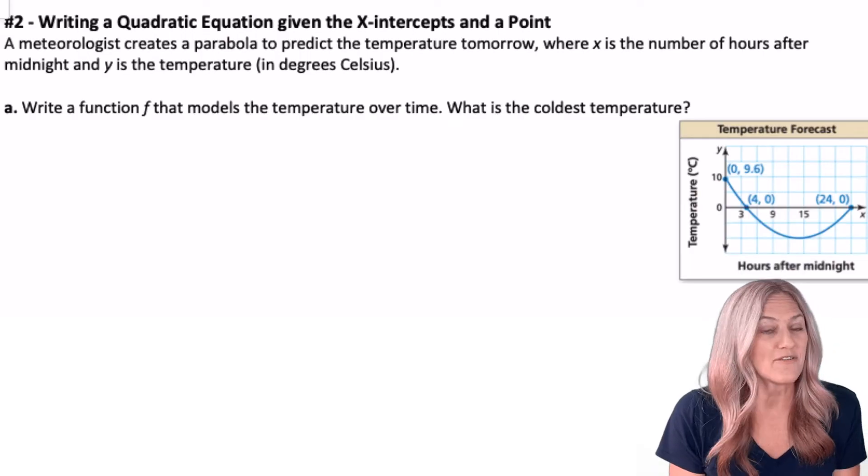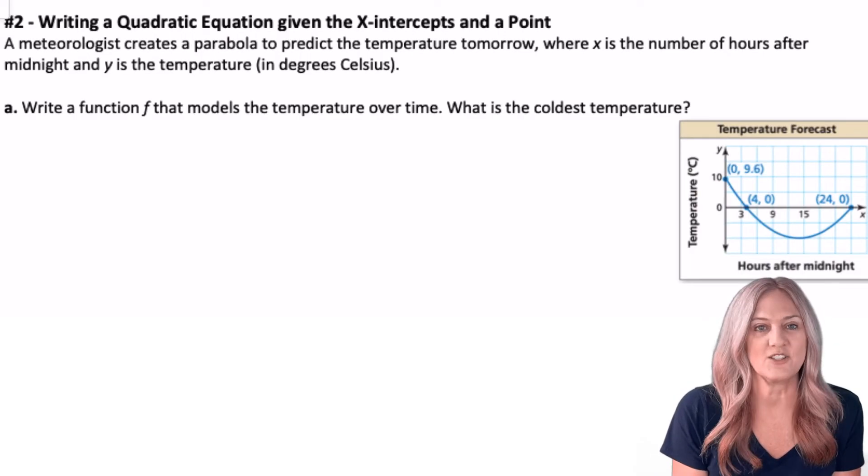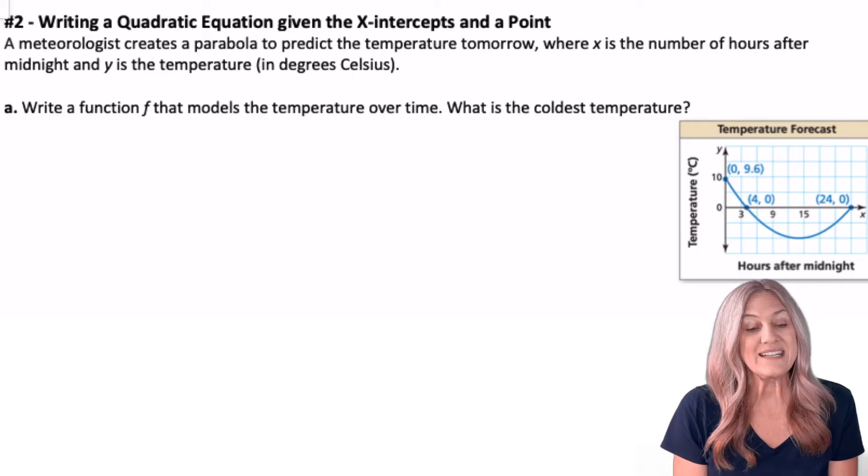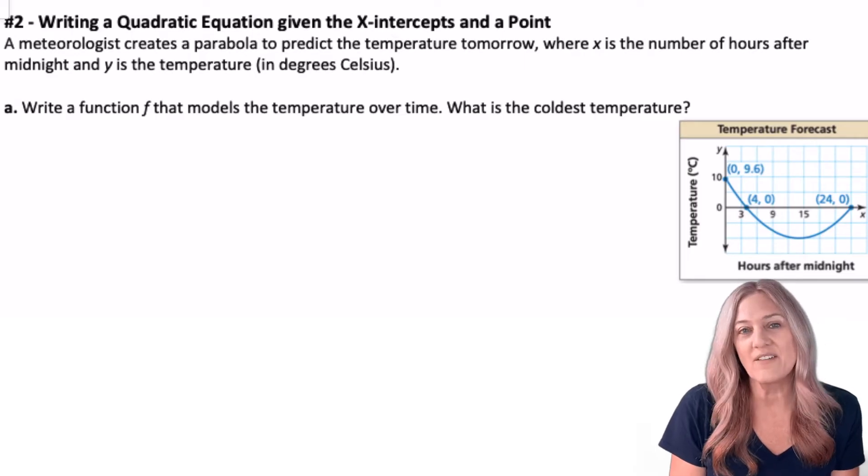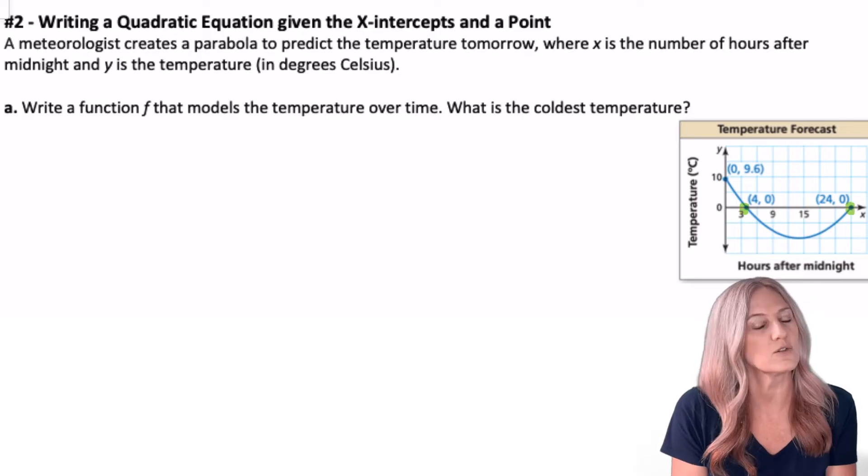In this situation, a meteorologist has created a parabola to predict the temperature tomorrow. Looking at the graph, we see the two x-intercepts. One is at (4, 0). One is at (24, 0).